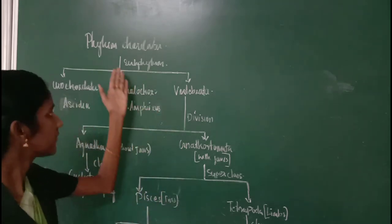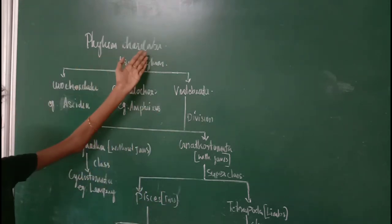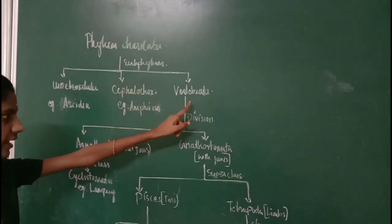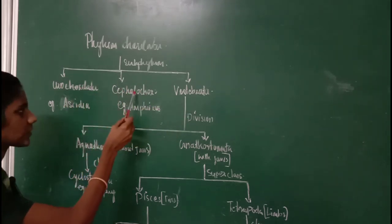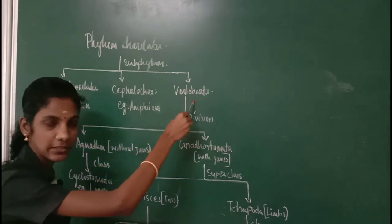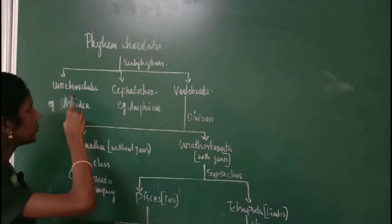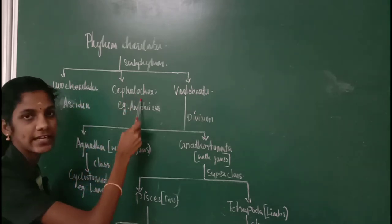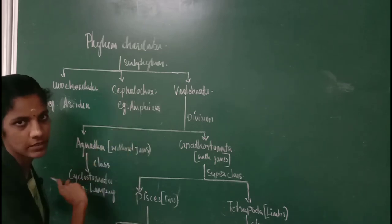Phylum Chordata can be divided into three main subphyla: Subphylum Urochordata, Subphylum Cephalochordata, and Subphylum Vertebrata. Urochordata and Cephalochordata are considered as the protochordates or primitive chordates.